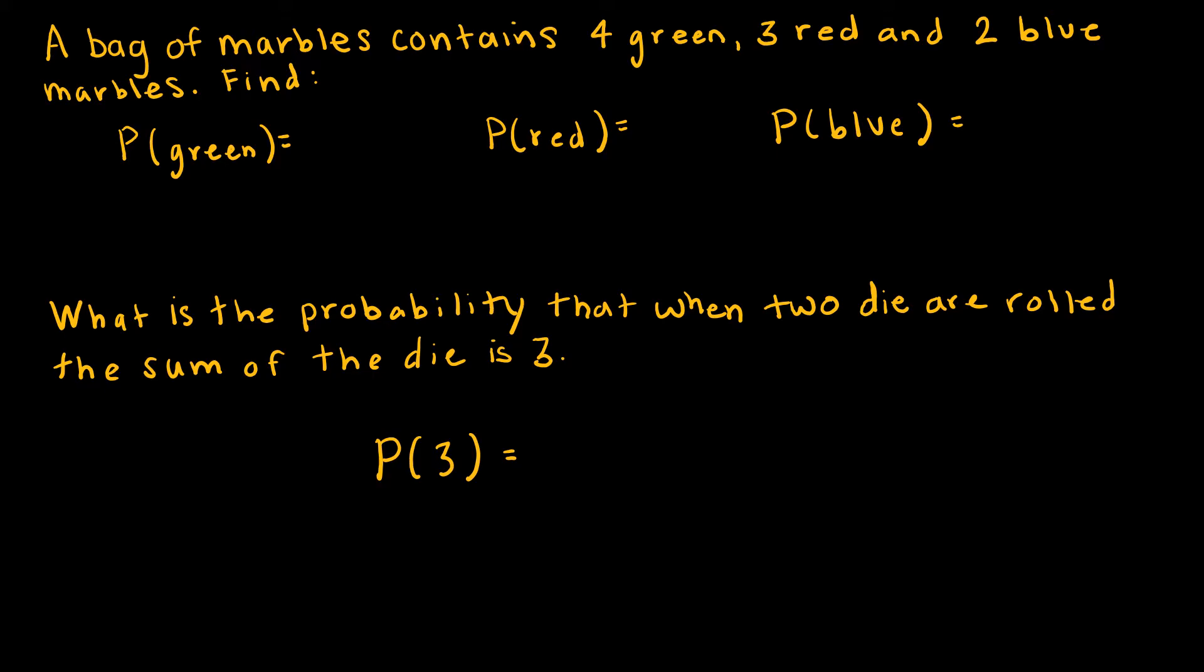I want to look at a few more examples. My first example doesn't have anything to do with Laplace's definition because they're not equally likely, and yet the concept is the same. We have a bag of marbles that contains 4 green, 3 red, and 2 blue. I have 9 total, 4 plus 3 plus 2. So the probability of green is 4 out of 9. Probability of red is 3 out of 9, which reduces to 1/3. And probability of blue is 2 out of 9.